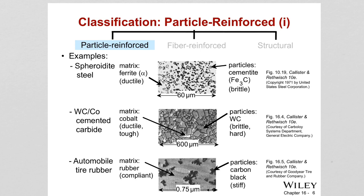An example is aluminum alloys for automotive connecting rods and pistons, which are strengthened and hardened by the addition of silicon carbide particles. Silicon carbide is the hard, stiffer phase added to aluminum to basically strengthen the material, making it suitable for use in connecting rods and pistons.